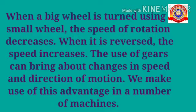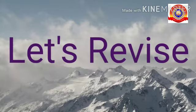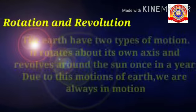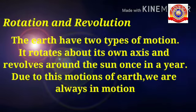So students, now I am going to give you the recap of the whole chapter along with motion we discussed so far. First we discussed about motion — rotation and revolution are the motions of the earth we are familiar with. The earth has two types of motion: rotation and revolution. It rotates about its own axis and revolves around the sun once in a year.